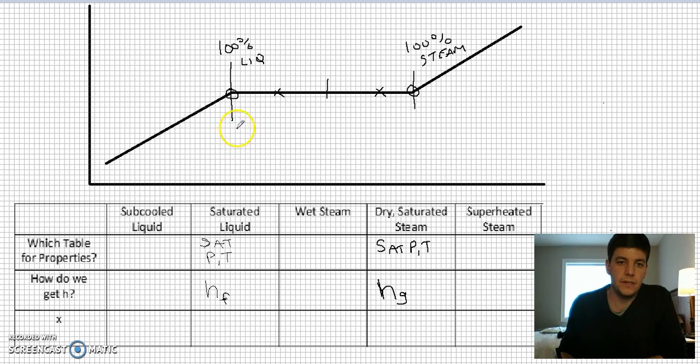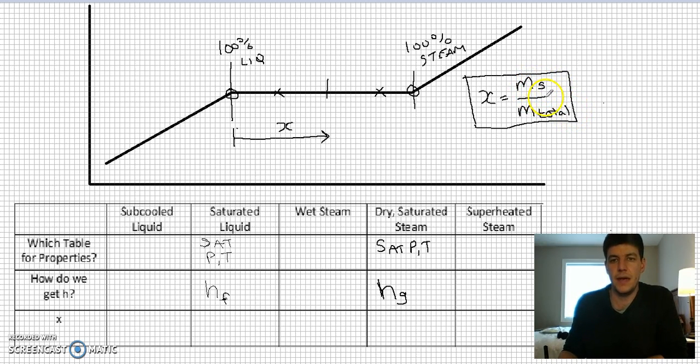What we define is this value X, and what X is, is a measure of how far am I from my saturated liquid point to my saturated steam. So really what X is telling me is the mass of steam compared to the mass total. That's the equation that defines X. But really what it's saying is how much has turned into steam compared to what I started with. X tends to be a decimal, so if it's over here, X would be equal to zero. X over here is equal to one, and anywhere in between, so in the middle here if I was right in the middle, X would be 0.5.